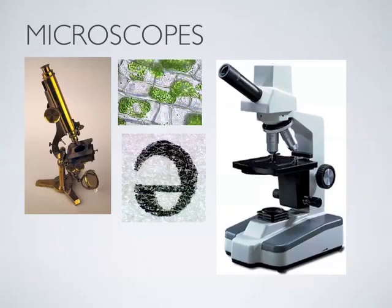This is obviously an older version of a microscope. Some of the first microscopes looked something like this. There's a variety of types, but they all basically work on the same principles. You have a set of lenses that magnify an object so that you can see detail you otherwise wouldn't be able to see. For example, that's a letter E — the newsprint seen through a microscope. Those are some plant cells. This is a modern microscope, similar to the ones we're going to be using.